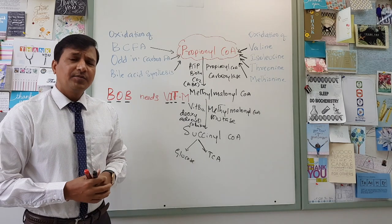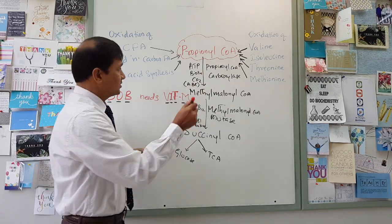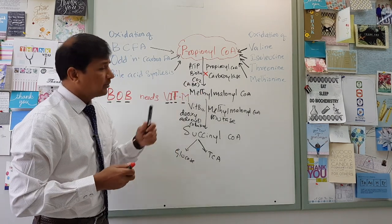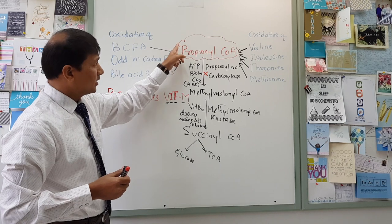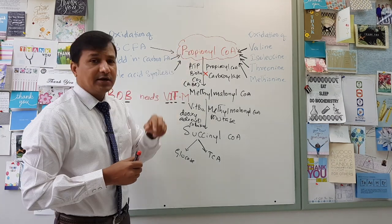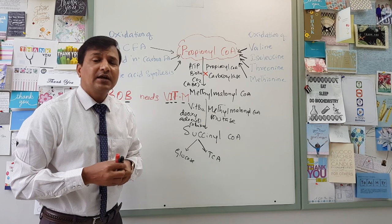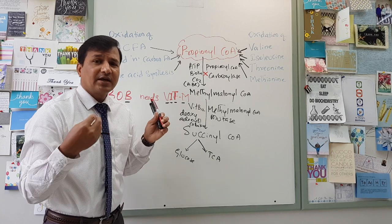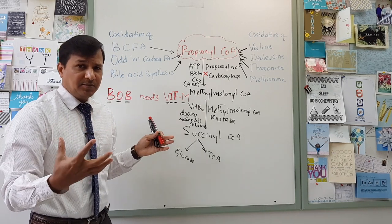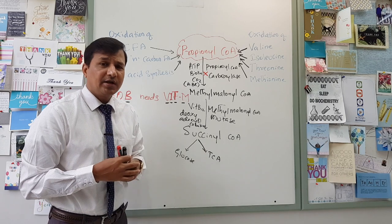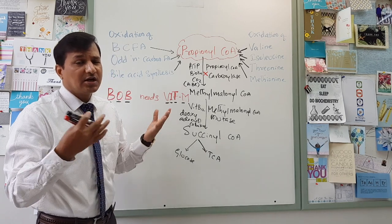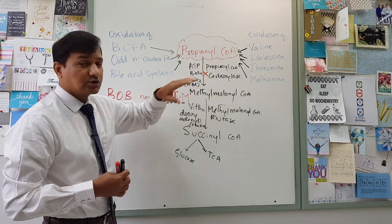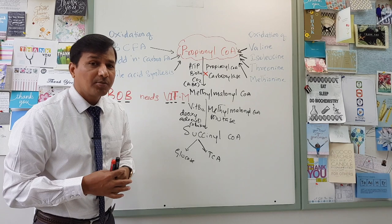Now, what if there is a mutation in the Propionyl-CoA carboxylase enzyme? Deficiency of this enzyme leads to elevation of Propionyl-CoA, which in turn leads to elevation of propionate, giving rise to a disorder called propionic acidemia or propionic aciduria — where there is excess propionic acid in the blood, causing metabolic acidosis and neurological signs.